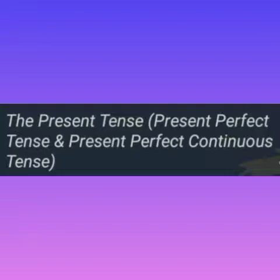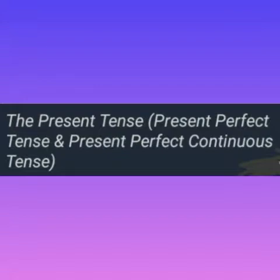The first use of present perfect continuous tense is to express an action which began in the past and is still continuing. For example: 'It has been raining since morning.' The second use is to express an action which has already finished but whose effect or result still persists. For example: 'She is shivering because she has been suffering from fever.' She was suffering from fever before; right now she doesn't have fever, but the effect — the shivering — is still present.